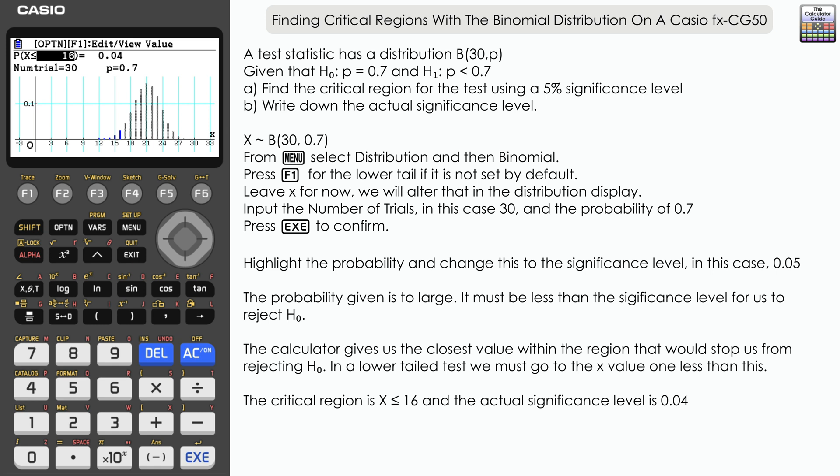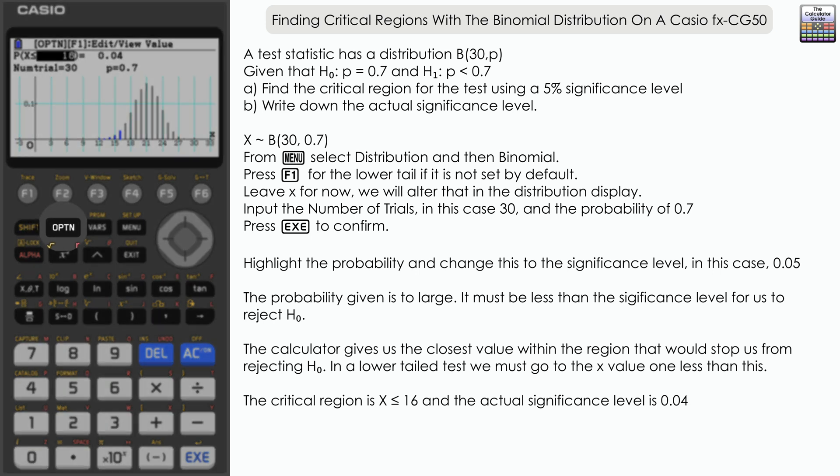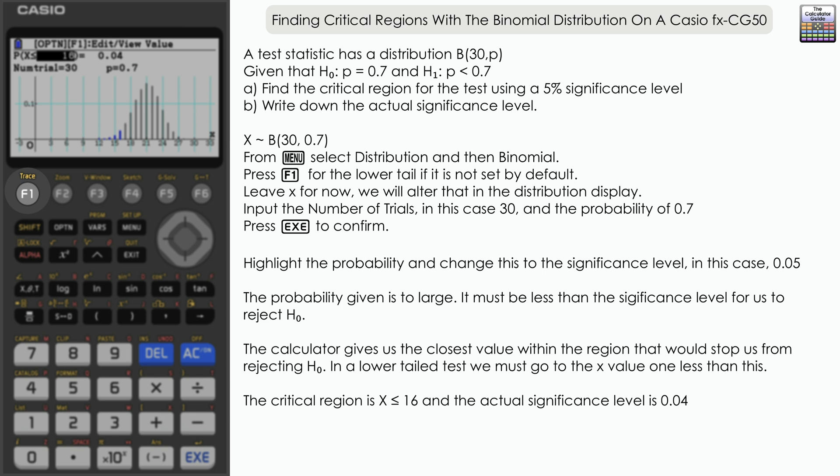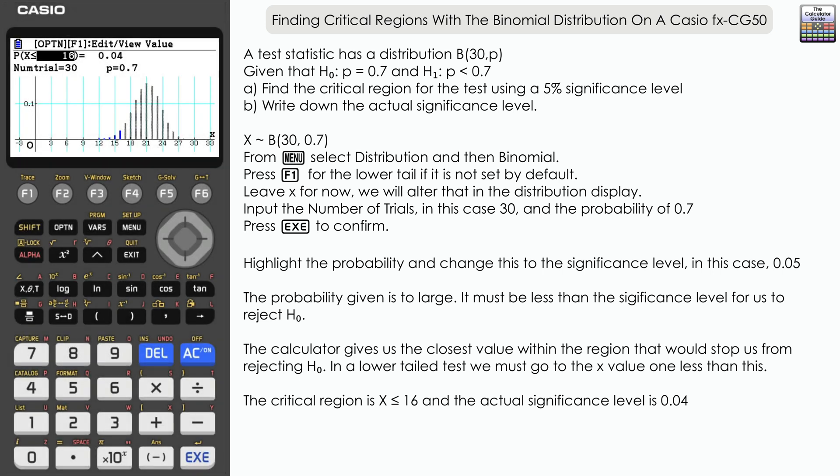Incidentally, if you do want a greater number of significant figures on your probability, you can highlight that and press Option and then F1 for Edit, but it was very close to 0.04 for this particular example.